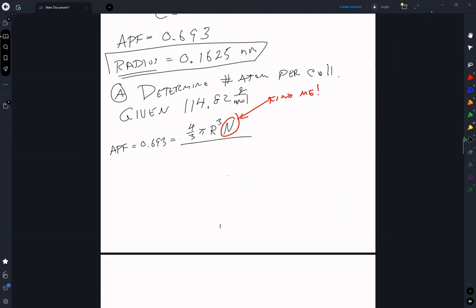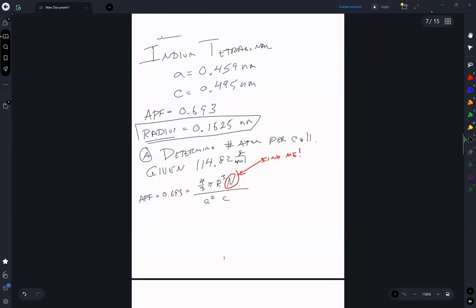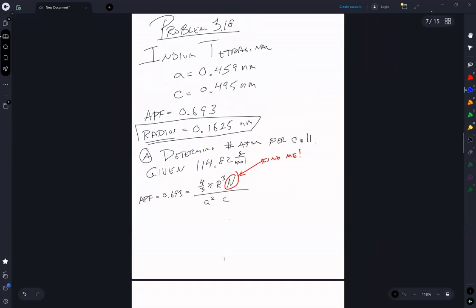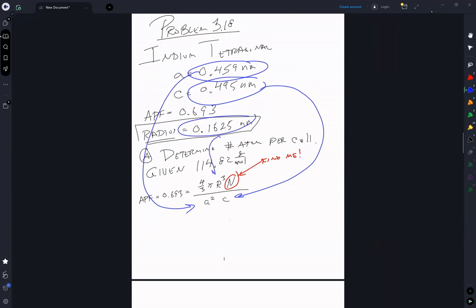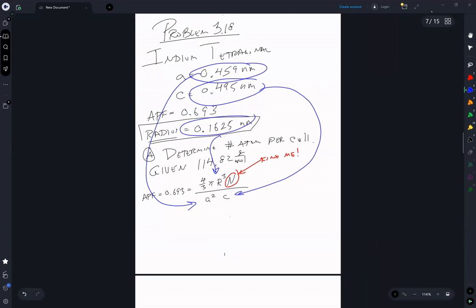We have a unit cell which has a base of A squared and a height of C. So we can substitute in A and C, and we can substitute in the radius.